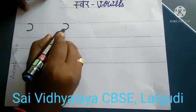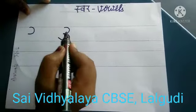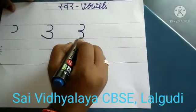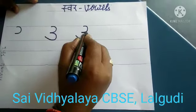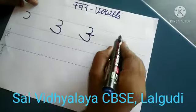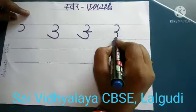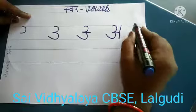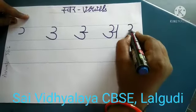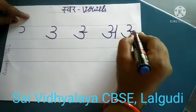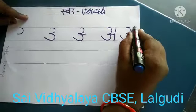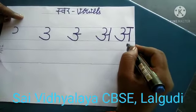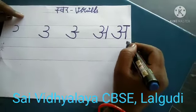Curve. Another curve. Put the small sleeping line. Then another standing line. Small sleeping line. What is this letter? The short sound of letter A.